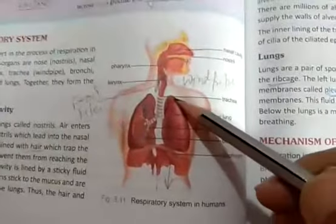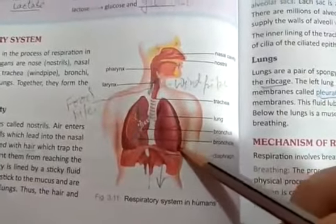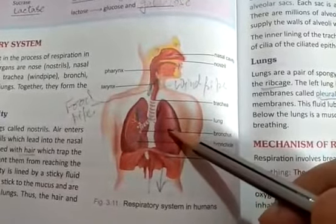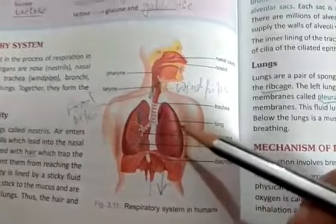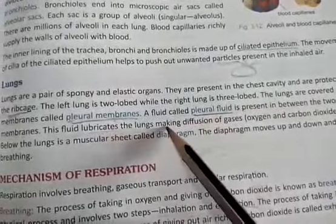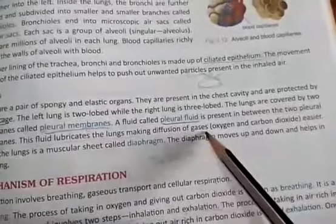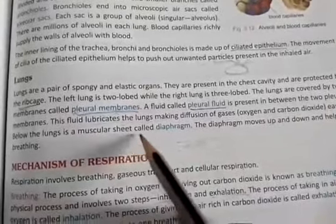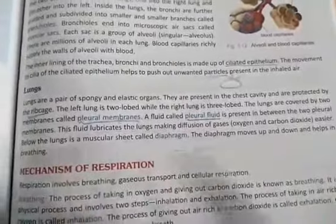The outer layer of the lungs has the pleural membrane — a double membrane structure — and inside that double membrane structure the fluid lubricates the lungs and makes the diffusion of gases easier. Below the lungs is a muscular sheet called the diaphragm. The diaphragm moves up and down and helps in breathing.